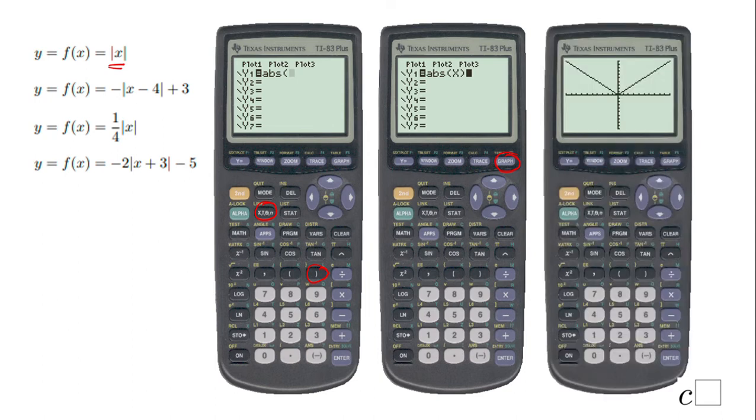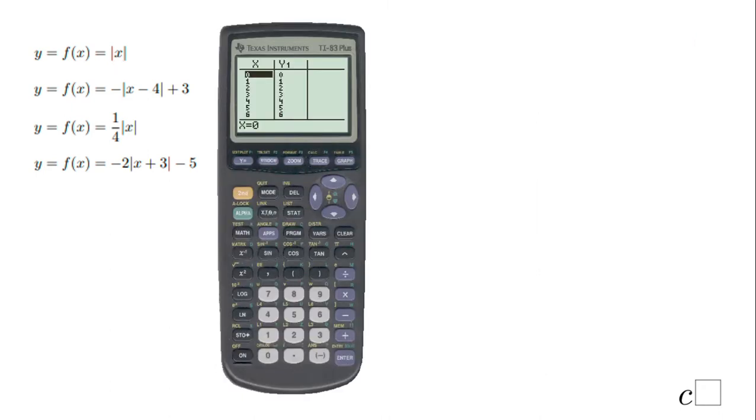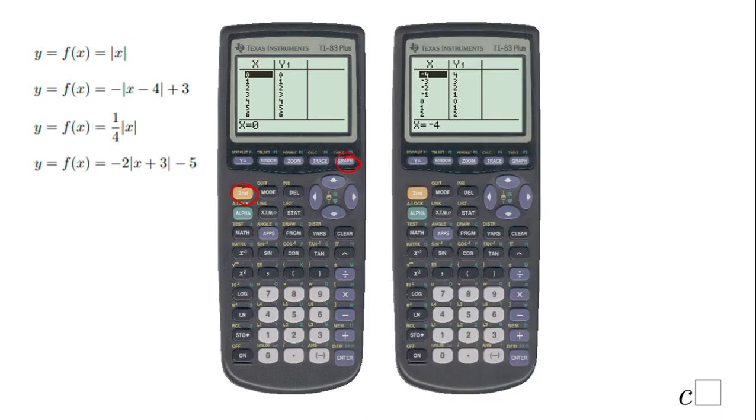This is absolute value of X. The next thing I want you to see is how to get this table, and that is simply by clicking second and then the graph button. You're going to get the table, and you see here the values. You can move up and down. I'll move up a little bit and you see also the negative values and the output on Y1.